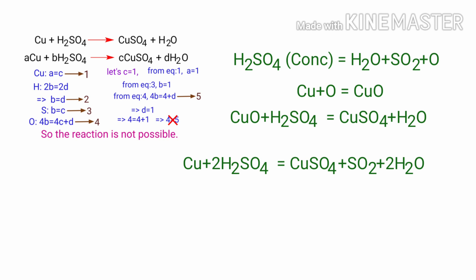Therefore, Cu plus 2H₂SO₄ equals CuSO₄ plus SO₂ plus 2H₂O. This is the balanced equation for Cu plus H₂SO₄.